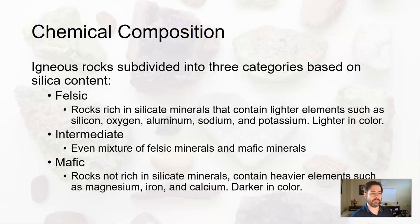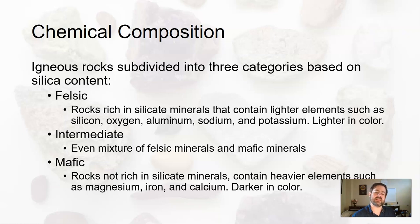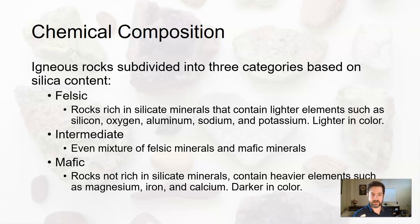The opposite of felsic is mafic. Mafic rocks are very dark colored igneous rocks. Mafic rocks are less rich in silicate minerals and tend to contain heavier elements such as magnesium, iron, and calcium. Those elements by their nature are darker in color when they chemically combine. So if you're looking at a darker igneous rock, it usually reflects a chemical composition with less silicate minerals.